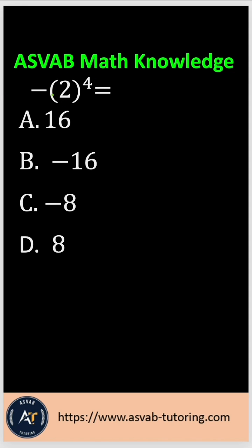The question says here: negative 2 parenthesis 2 to the 4th power. People always get confused with that — from my experience teaching ASVAB over 10 years. Normally people just multiply 4 times 2. That is not correct.